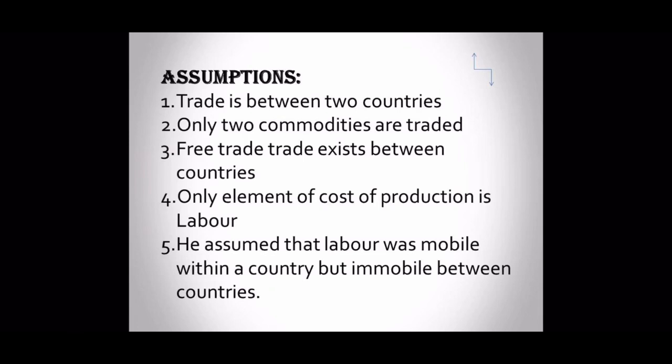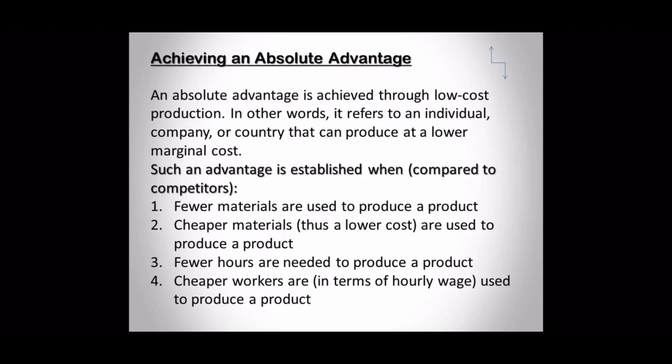Now the key point is we need to identify that both countries have an absolute advantage in at least one good each, so that they can trade. How do we know that? Let's see how an absolute advantage is achieved. An absolute advantage is achieved through lower cost production. In other words, it refers to a country or company that can produce at a lower marginal cost compared to the other country.